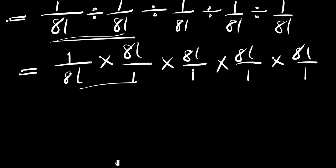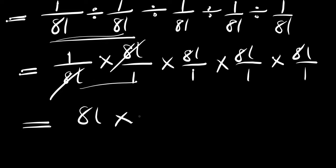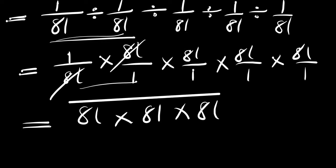So what will happen is 81 here will eliminate 81 here, so we are going to have 81 times 81 times 81. Don't forget that we have our square root here.